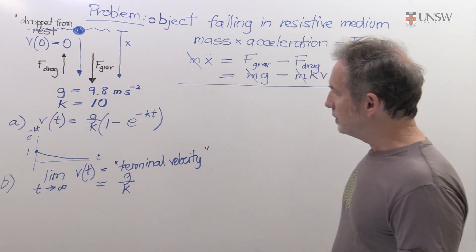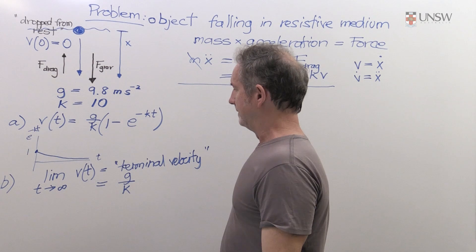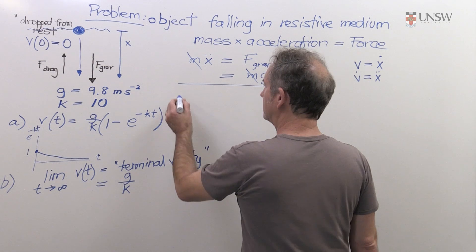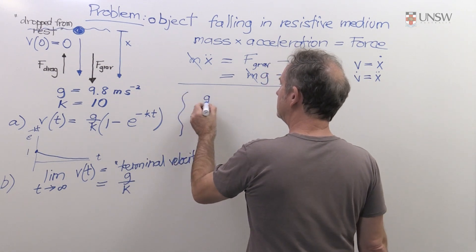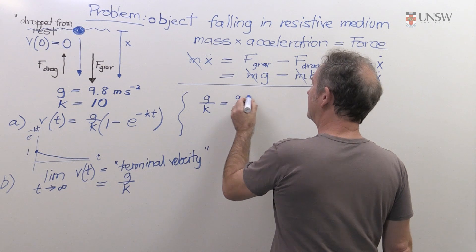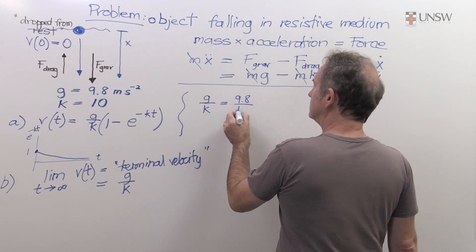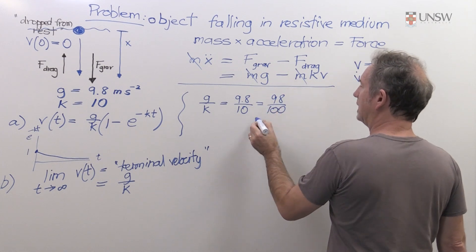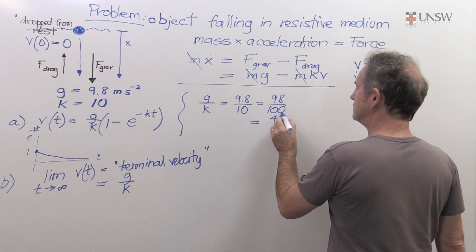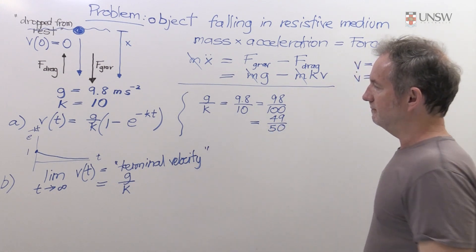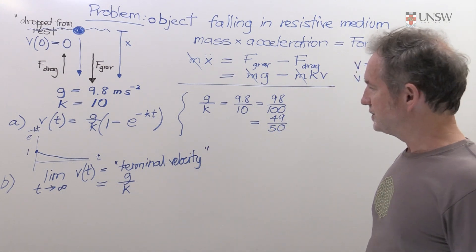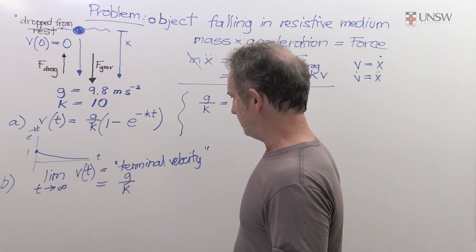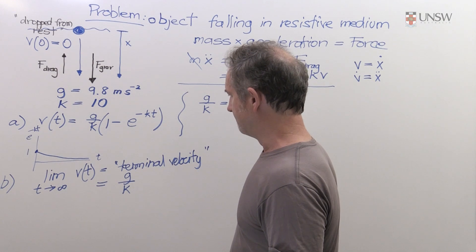Up to now I've done everything without putting the numbers in. But if you look at the solutions, you'll see that they just differ from this because we've gone and figured out g/k. So this is 9.8 on 10, or if you like, 98 on 100, or if you like, as expressed in the solutions, 49 on 50. So there are answers. But I think sometimes it's better to almost do things with the symbols so that we don't get caught up in the arithmetic.